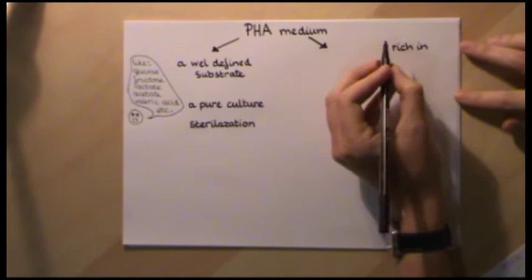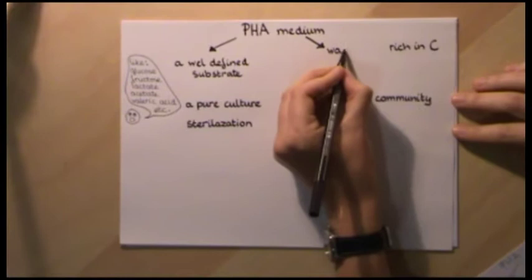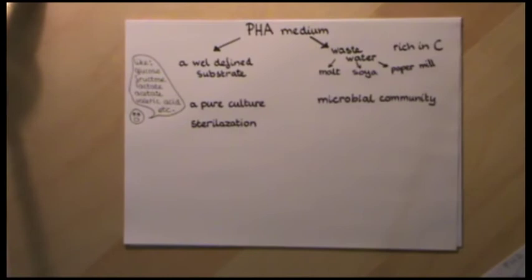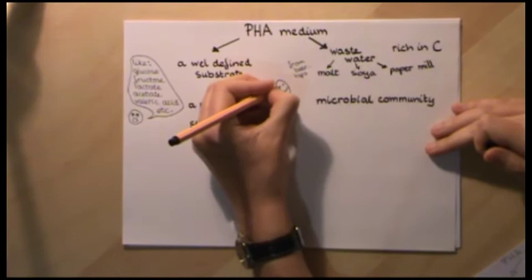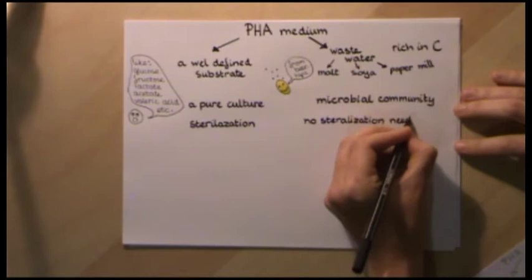A medium like waste. Because of this, there is much research going on in making PHAs out of wastewater — for instance, malt wastewater, soya wastewater, but also paper mill wastewater. A recent study showed it is already quite feasible to produce polyhydroxyalkanoates by microbiome enrichment in paper mill wastewater.